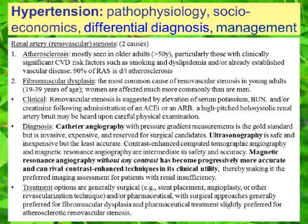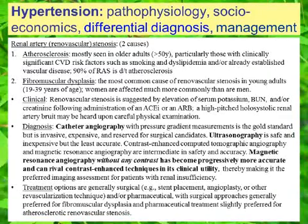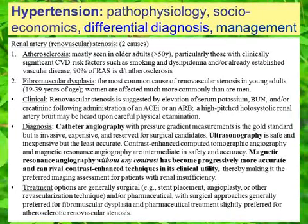Clinically, what we see with renal artery stenosis, regardless of the underlying cause, is an elevation in potassium, BUN, and/or creatinine following administration of an ACE inhibitor or an ARB, angiotensin receptor blocker. We might also notice a high-pitched holosystolic renal artery bruit on careful physical examination.